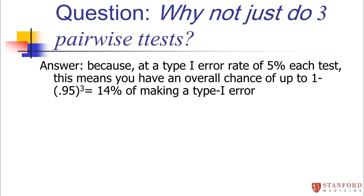If these were independent comparisons — and they're not truly independent, but assuming they were — each test has a 5% chance of a type one error. So what's the chance of making at least one type one error? That's one minus 95% raised to the third power. Using our probability trick, one minus the probability of none equals the probability of at least one. So we have roughly a 14% chance of making a type one error, which increases our type one error rate if we run all three pairwise tests.